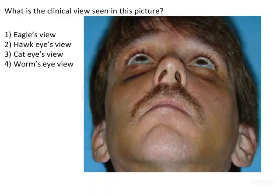What is the clinical view seen in this picture? The patient photograph has been taken from below, from the chin side, and the patient has been asked to look upwards in order to define what we are trying to see. Among the four options given: the first is Eagle's view, second is Hawk eye, third is Cat eye, and fourth is Worm's eye.